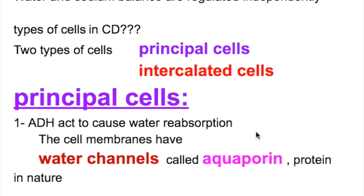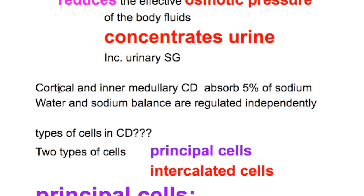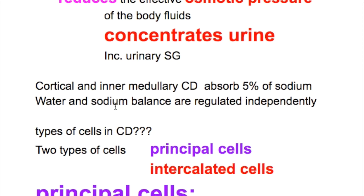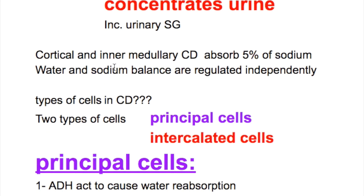In this video we'll discuss the cells of the collecting ducts and their function. The cortical and inner medullary collecting ducts absorb 5% of sodium. Water and sodium balance are regulated independently — water by ADH and sodium by aldosterone.